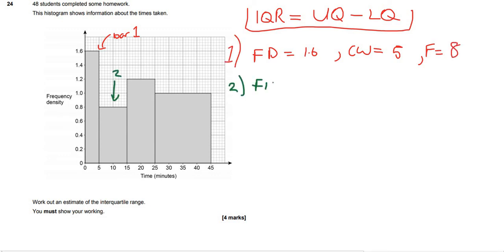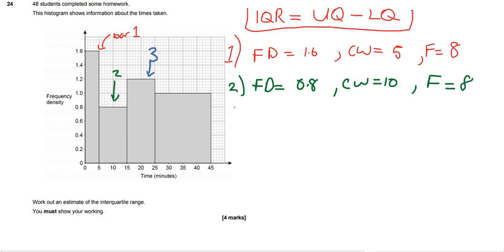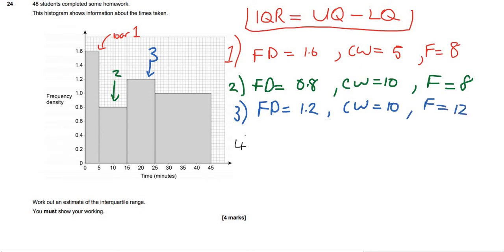For bar 2: frequency density equals 0.8, class width equals 10, so frequency equals 8. For bar 3: frequency density is 1.2, class width is 10, so frequency is 12. And finally, bar 4: frequency density is 1, class width is 20, so frequency is 20. You should spot that all of these add up to 48, which is good.